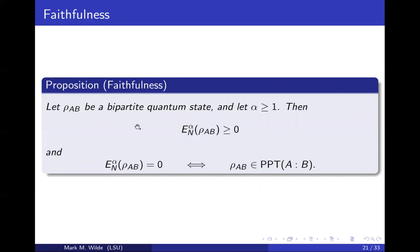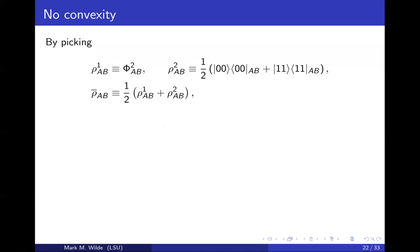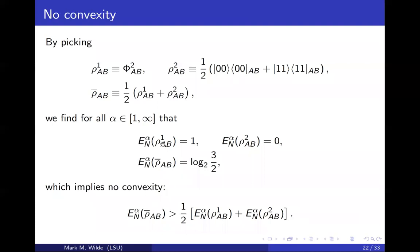Faithfulness holds for the alpha logarithmic negativity. It's not convex — if it were convex, this inequality would hold. Convexity is the statement: if we have a first state rho1_AB, a second state, and take an equal mixture to get an average state rho-bar, then if the measure were convex, the opposite inequality would hold. But we found very simple examples of two-qubit states where convexity is violated. Why is convexity intuitive? Under certain circumstances you can understand it as: if you discard classical information, then entanglement would not go up. But that only holds in certain circumstances and not for the alpha logarithmic negativities.